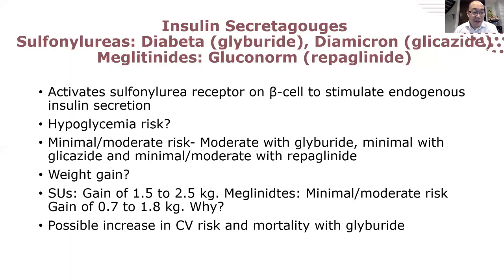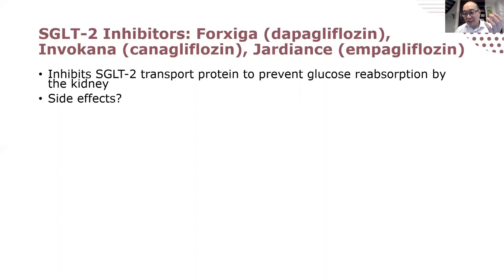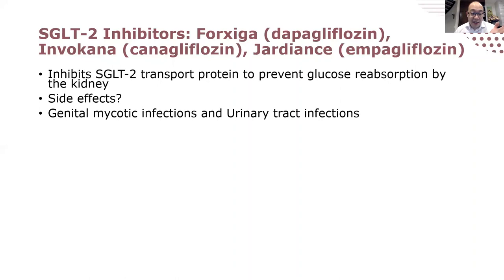SGLT2 inhibitors work by inhibiting the kidneys' reabsorption of sugar from urine back into the bloodstream. There are two types — SGLT1 and SGLT2. In terms of side effects: if you have a lot of sugar in your urine, bacteria and yeast love sugar and multiply, so this can lead to yeast infections and urinary tract infections. Sugar also acts as an osmotic agent to grab water, giving SGLT2 inhibitors a mild diuretic effect — many patients will notice they're going to the washroom more often.